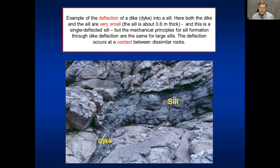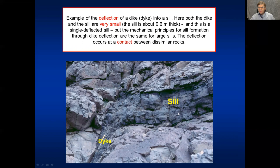Here is an example of a dike deflecting into a sill: it comes up and meets a contact between mechanically slightly different rocks, then follows in one direction. The sill is only 60 centimeters thick and the dike is only 20 centimeters thick — very small features — but the physical principles for a large sill and a thick dike are exactly the same.